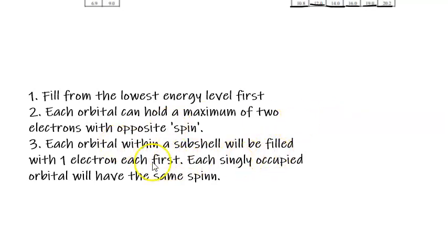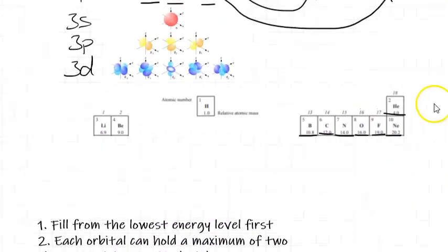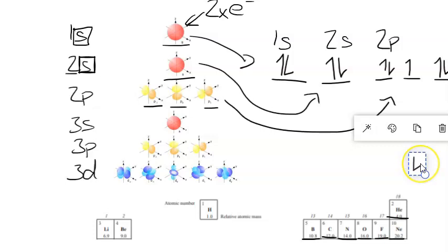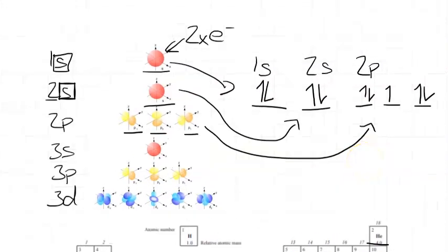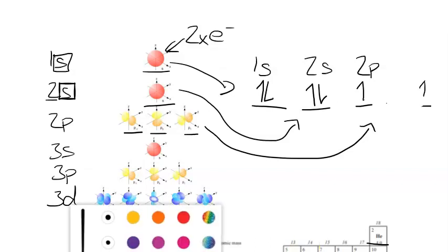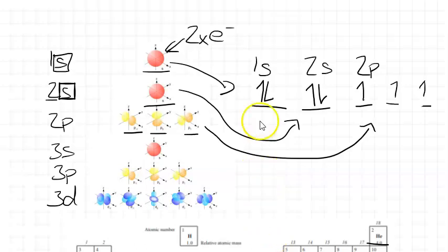Each orbital within a subshell will be filled with one electron each first. Each orbital is singularly occupied. Each singularly occupied orbital will have the same spin. So that was when I was going through here. So that's just us showing that first of all, we fill each orbital with the same spin. So doing it like that is correct. If I was filling one orbital at a time with opposite spins like this, that would not be correct. They all need to be going in the same direction.